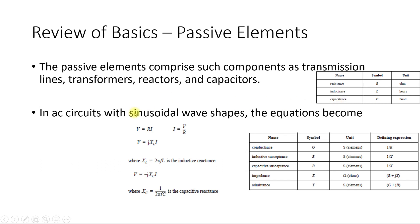In an AC system with a changing sinusoidal wave, the equations for these become: for resistance, V = IR or I = V/R. Inductance can be converted into reactance: X_L = 2πfL, where f is the system frequency — 50 Hz in India, 60 Hz in the USA.